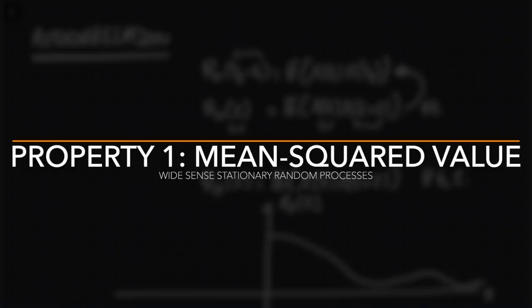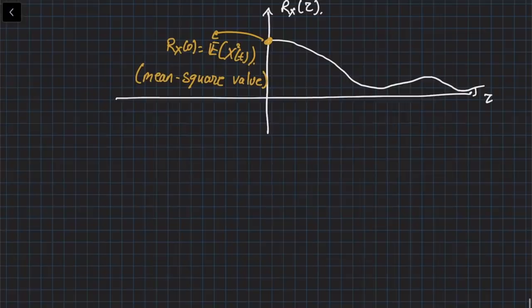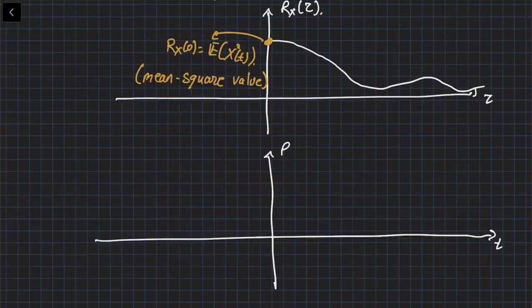The first important property is the value at τ=0. At τ=0, R_X(0) = E[X(t)²], which is the mean square value. You're taking the mean of the square of your random process. Let's redraw R_X(τ) as a 1D function and examine R_X(−τ).